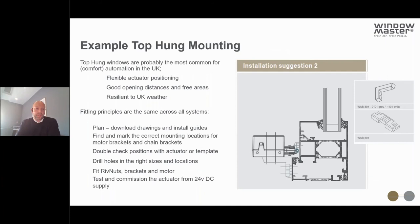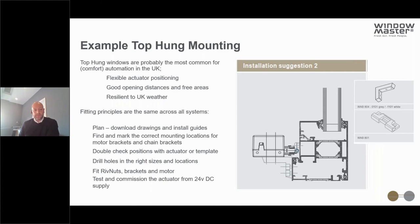If there's more than one actuator, it's really important they are synchronised on the window so they don't skew the sash — our actuator technology enables this simply through the cabling arrangement. A top-hung mounted window is probably the most common arrangement in the UK, offering good flexibility for actuator positioning, good opening distances and free areas, and resilience to UK weather. The fitting principles are the same across all systems: plan, download drawings and installation guides, find and mark correct mounting locations, double check positions, drill holes, fit rivnuts, brackets and motors, then test and commission. Actuators go through a short commissioning process of opening and closing to find their home position.